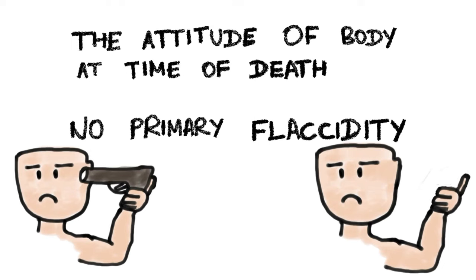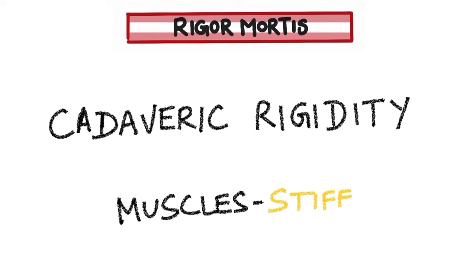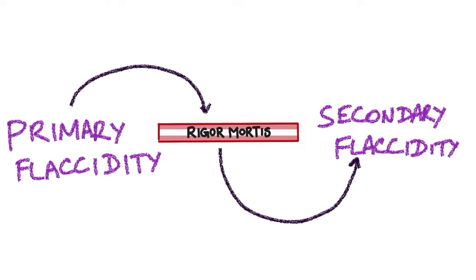Rigor mortis, or cadaveric rigidity, is a condition where the muscles become stiff, and it does not develop immediately after death like cadaveric spasm. Initially, immediately after death, there is a stage of primary flaccidity where all muscles of the body become relaxed and all parts of the body are easy to move. After that, rigor mortis sets in — muscles become rigid and stiff. Once rigor mortis is over, there is a stage of secondary flaccidity where the body again becomes flaccid.